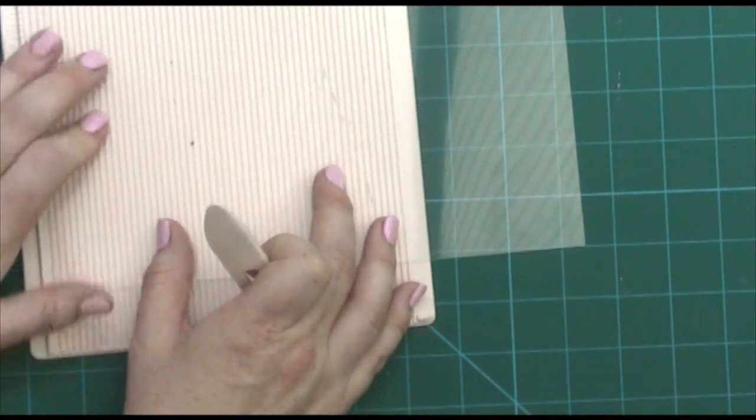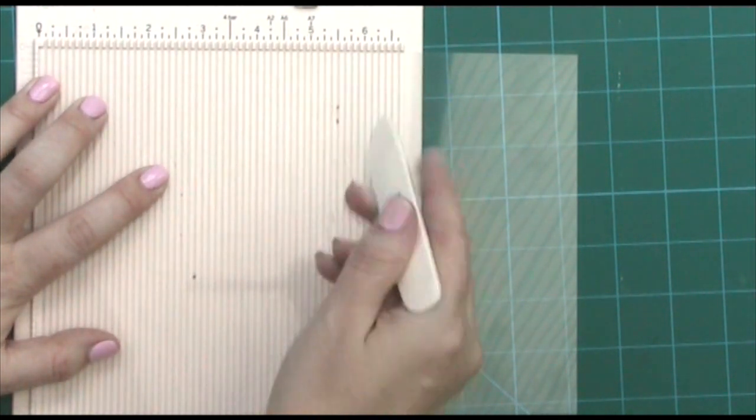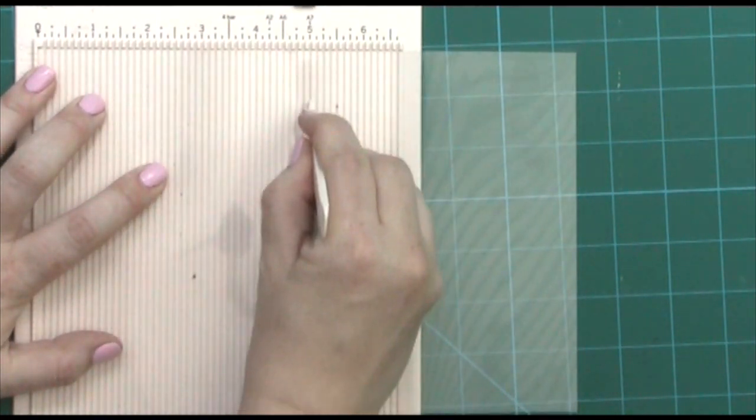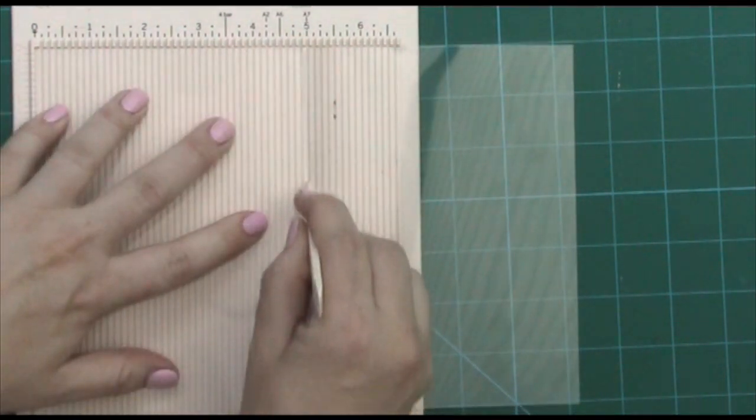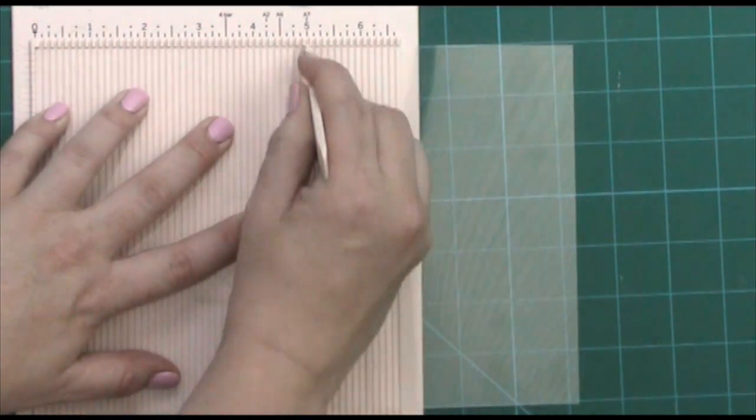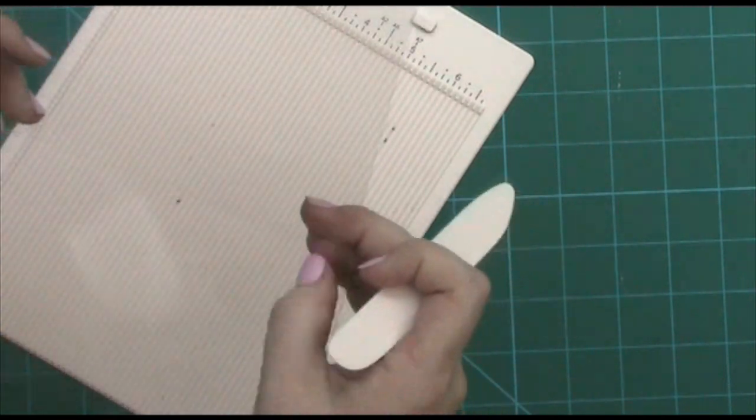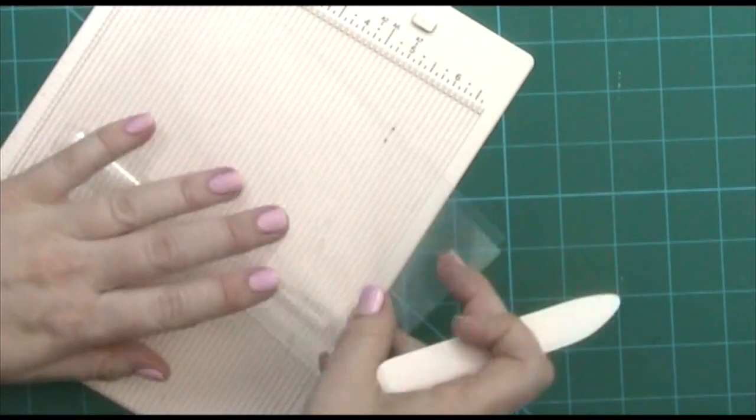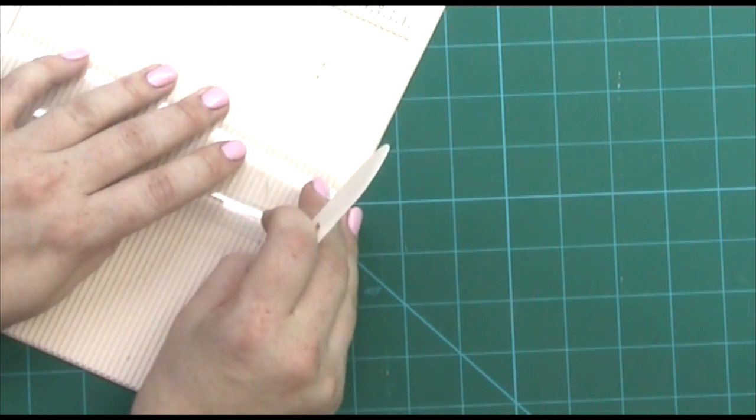Now when you score on acetate, just be careful at the top edge here that you don't catch the top. I would start slightly down and hold on to it because it has a habit of moving about and then you lose it, and then you fold it the way it wants to go. Unlike card, we kind of fold it against the card where we score.